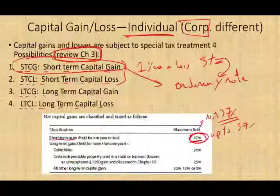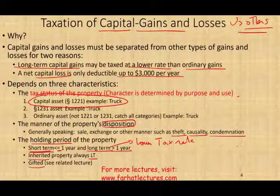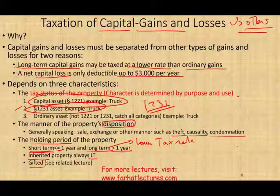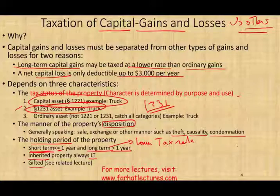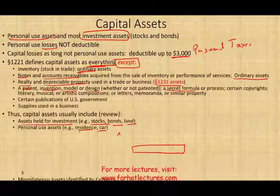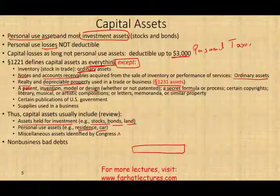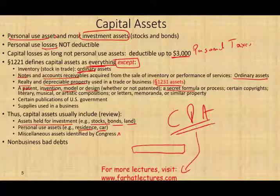To summarize, capital assets are subject to different capital gains and capital losses treatment, which is why we must know what a capital asset is and whether the gain or loss is short term or long term, because the holding period affects how it's taxed. Section 1231 will be covered in more detail later on. If you have any questions about this recording, please email me. If you're studying for your CPA exam, study hard. Please consider donating if you visit my website for additional lectures. Good luck.